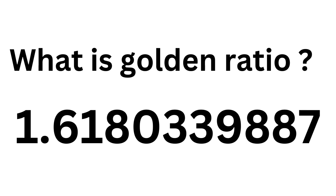What is golden ratio? The golden ratio, also known as the golden mean or golden section, is a mathematical concept that describes a specific ratio between two quantities.